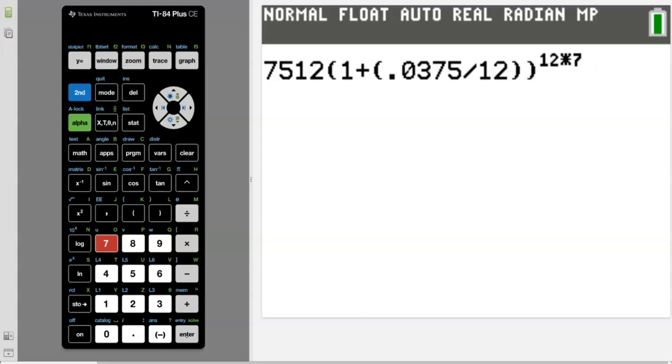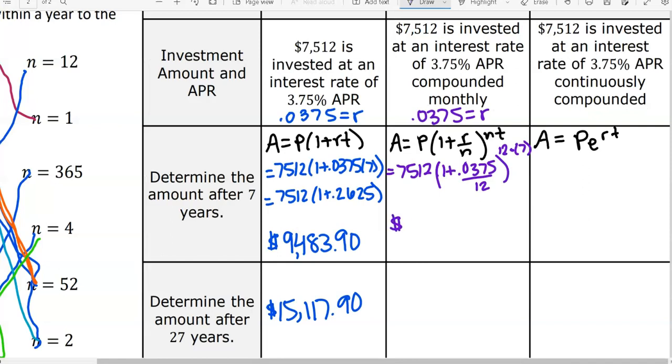One plus, here's our rate divided by our 12 months, close my factor, raise it up to 12 months times seven years. So if you're not sure how to type it in, that's what it should look like when you type it in. What did you get? 9762.93. If you're good with that one, go ahead and do it for 27 years.